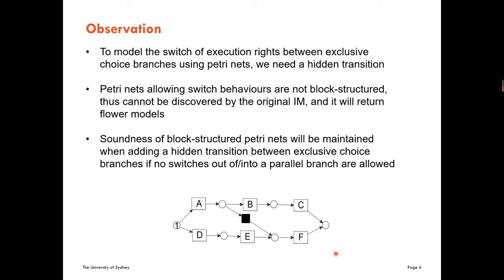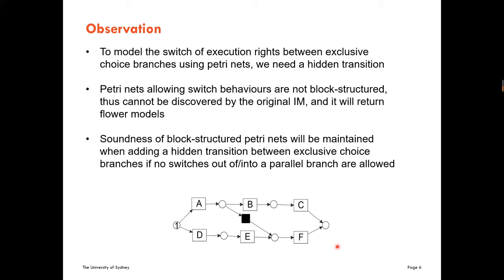Another interesting point is that if we take a block-structured Petri net that is sound and try to add a hidden transition between different exclusive choice branches, as long as we are not switching out of or into a parallel branch, the soundness of the Petri net can be maintained. Because the Inductive Miner always produces process trees, it is limited to block-structured process models. So in order to capture switch behaviors, we defined an extension to the process tree called the switch process tree.